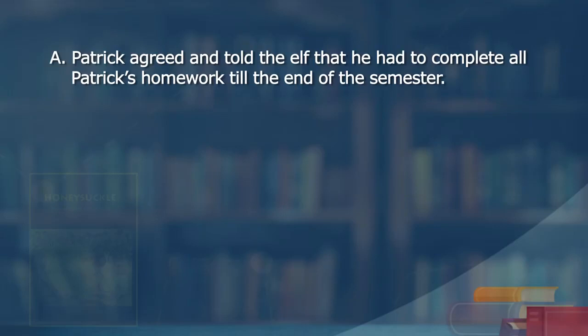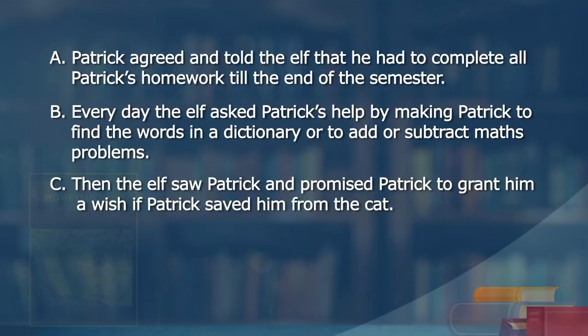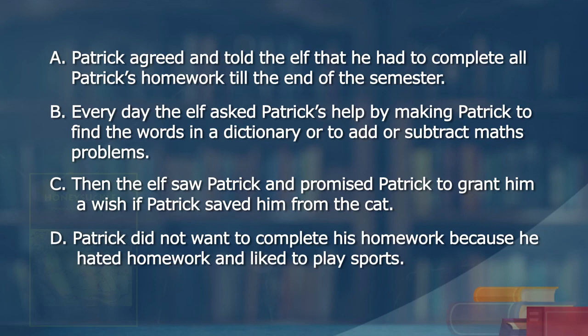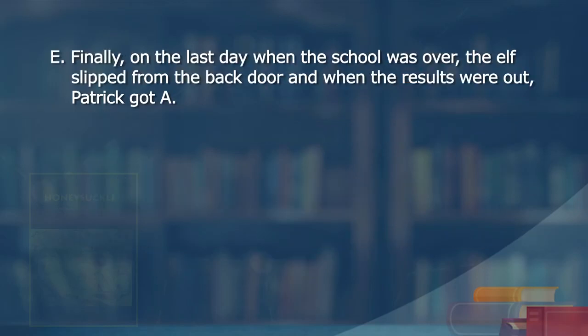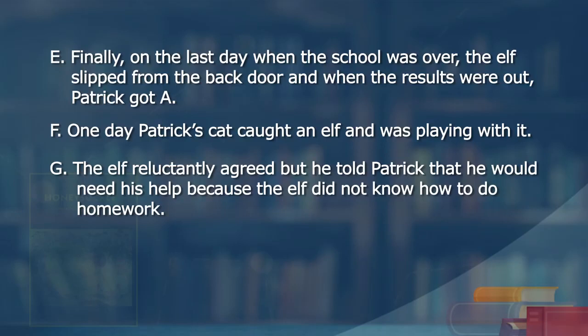Here are the jumbled sentences: A) Patrick agreed and told the elf he had to complete all Patrick's homework till the end of the semester. B) Every day the elf asked Patrick's help by making him find words in a dictionary or solve maths problems. C) The elf saw Patrick and promised to grant him a wish if Patrick saved him from the cat. D) Patrick did not want to complete his homework because he hated it and liked to play sports. E) Finally on the last day when school was over, the elf slipped from the back door and Patrick got his A's. F) One day Patrick's cat caught an elf and was playing with it. G) The elf reluctantly agreed but told Patrick he would need his help because the elf did not know how to do homework.